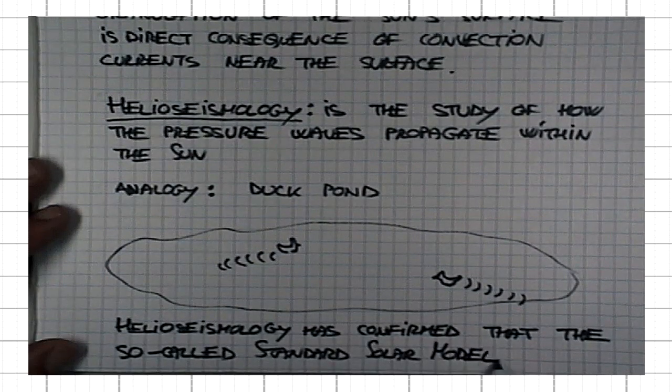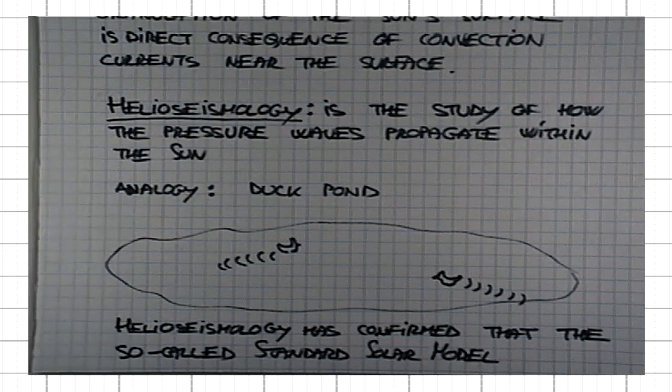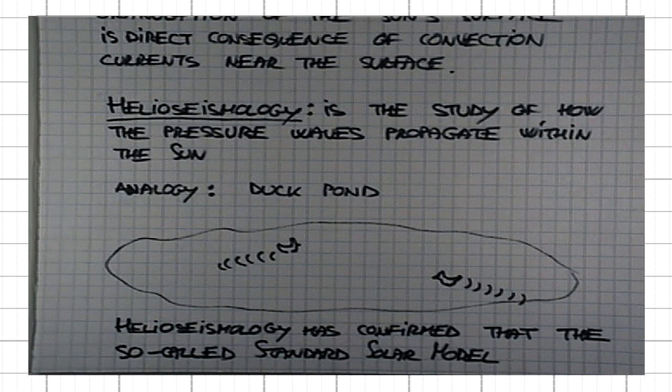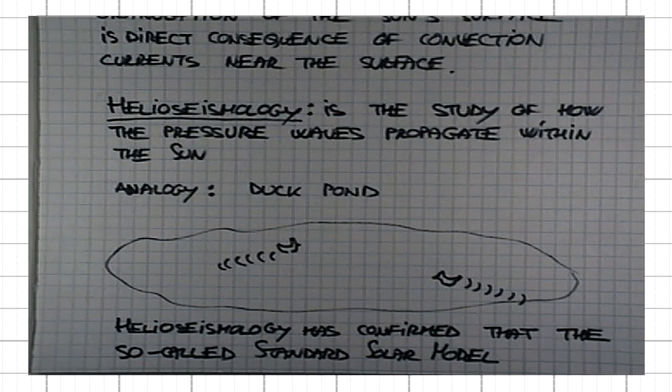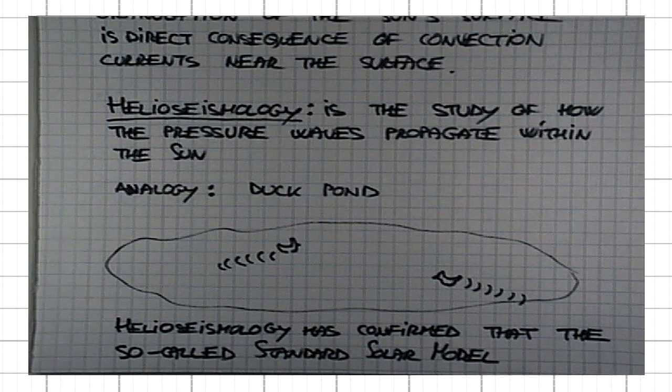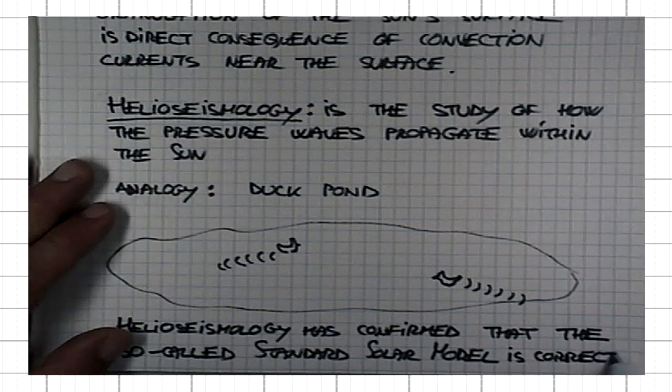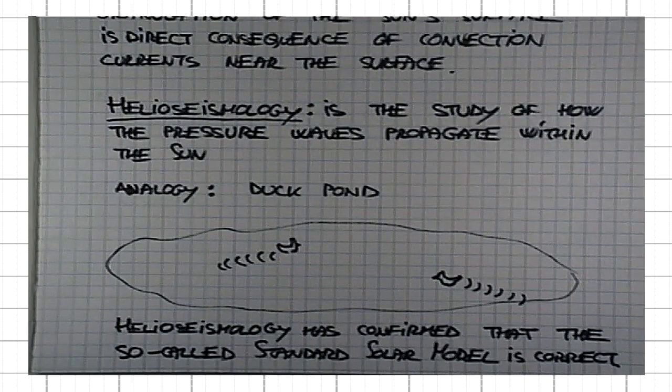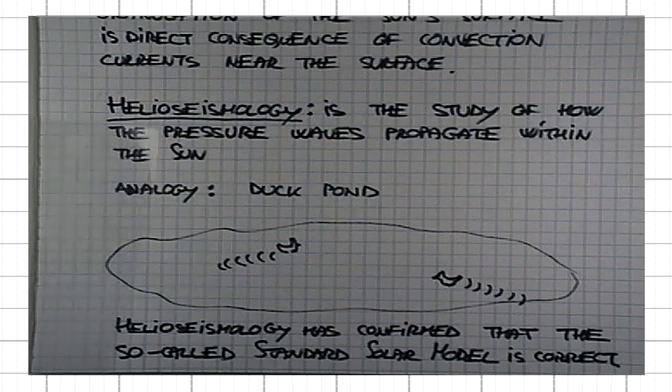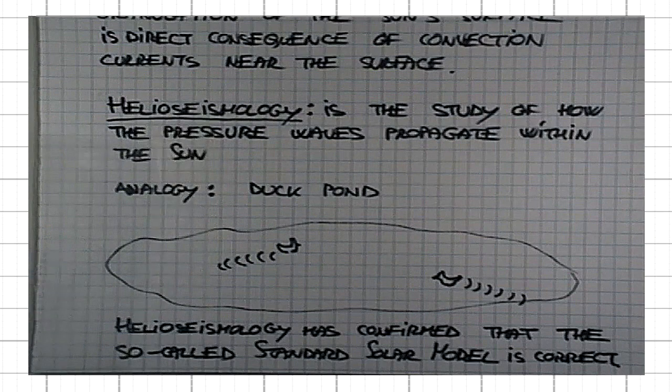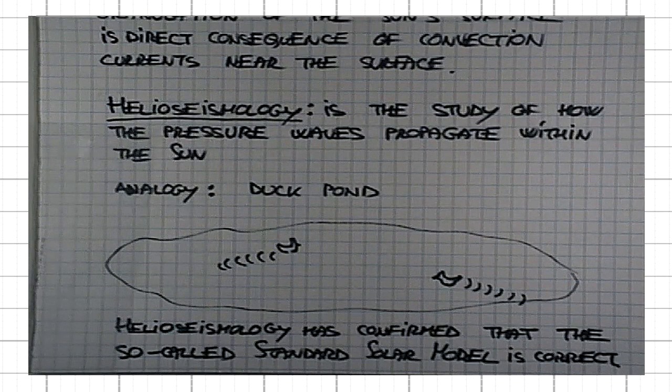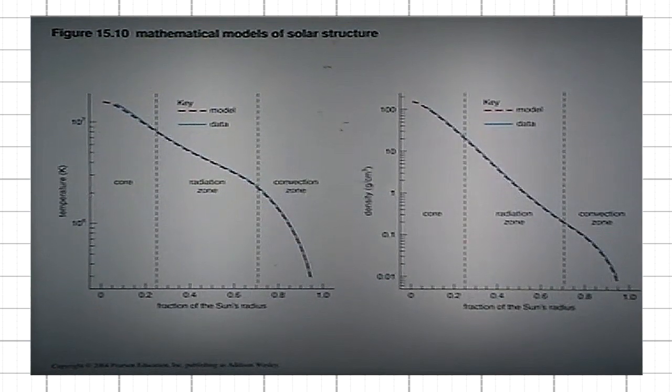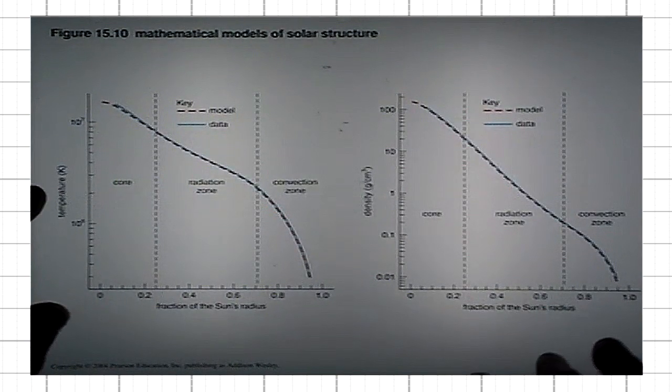What do I mean by standard solar model? I mean our ideas as to how the energy is produced, how it's transported to the surface is correct. Let me just show you the spectacular agreement between what is obtained by our measurements and what the theory predicts. You can find few places in science where you get such incredible agreement.